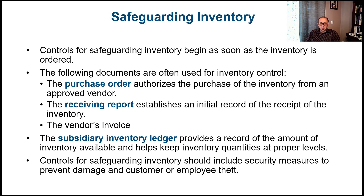Similar to how we have separate accounts in a general ledger, the subsidiary inventory ledger has all inventory items, each on a separate page, with purchases and sales of each item recorded in one place. The benefit of the subsidiary inventory ledger is that it tells you exactly how many units we have of every specific inventory item.